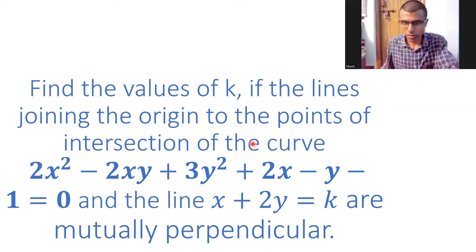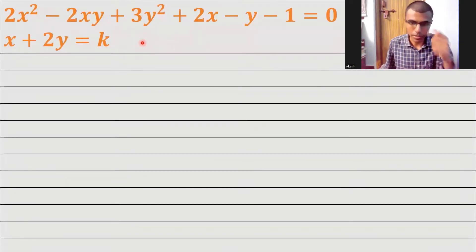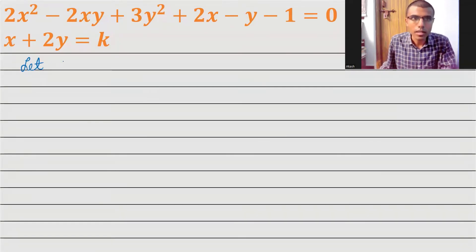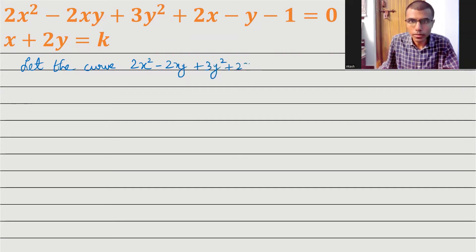This is the equation — I kept it here so that it would be easy. Let the curve be 2x² minus 2xy plus 3y² plus 2x plus 2x minus y minus 1 equals 0, which I'm going to mark as equation 1.